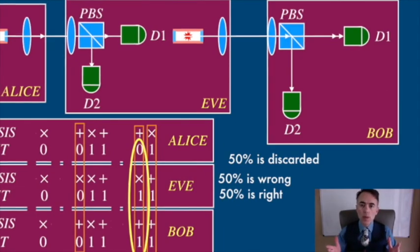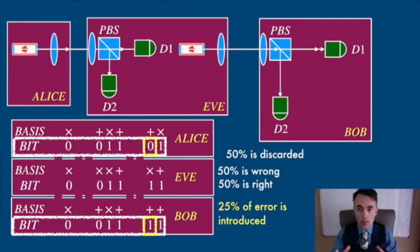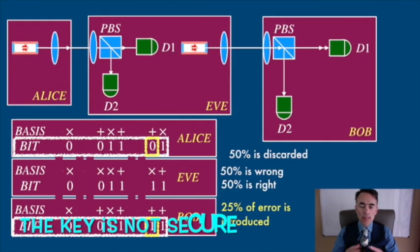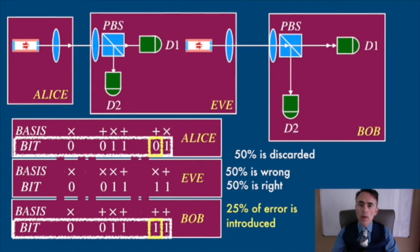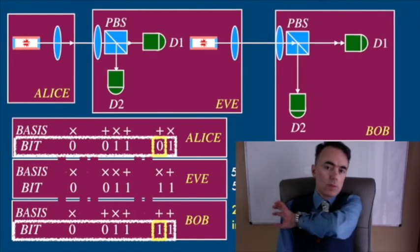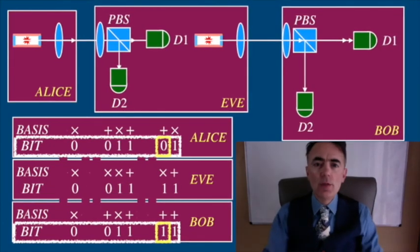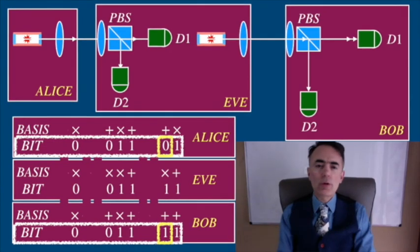This means that when Alice and Bob share their chunk of key publicly, they will see error in the key. They will see a 25% of error of the bits as wrong. This will tell Alice and Bob that the key has been compromised and is not secure. Eve is in the way and has stolen part of the information of the key. Alice and Bob can discard this key completely and try again, or proceed with some post-processing to reduce the information that Eve has gained by following some error correction protocols.